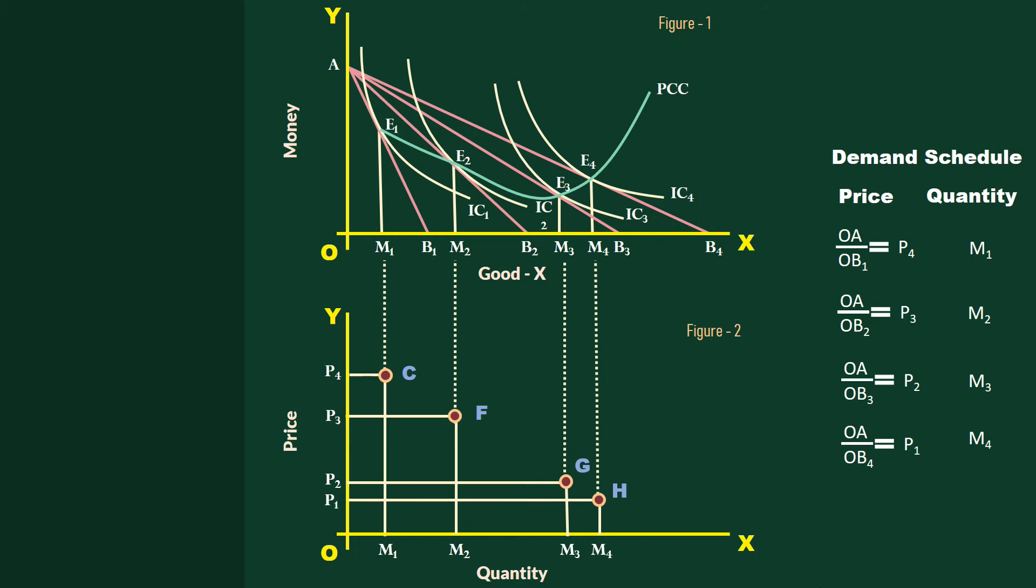Join points C, F, G and H with the help of a smooth line. What you get is the demand curve for Good X.